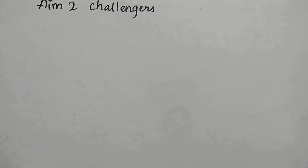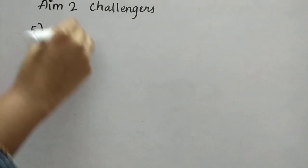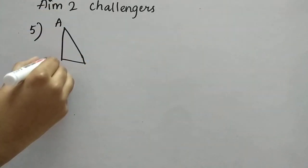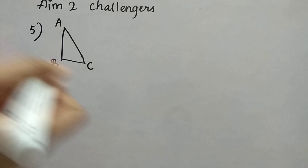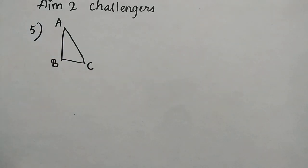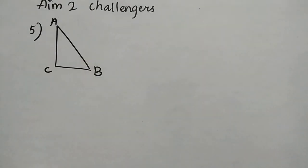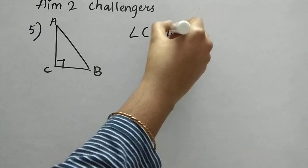The fifth question is: in a right angle triangle ABC, let's take a right angle triangle and name it ABC. The question states that angle C is 90 degrees. So now let's change the naming and diagram accordingly — it is ABC with C equal to 90 degrees.